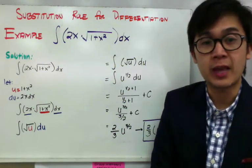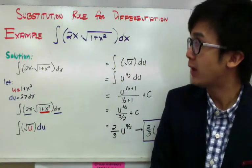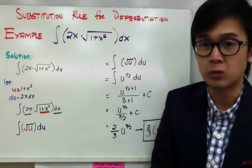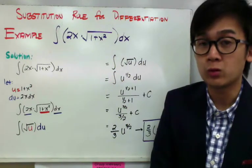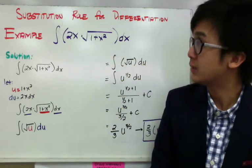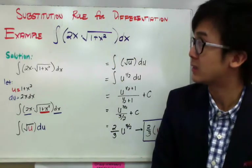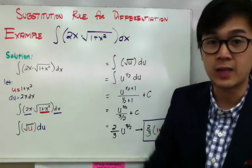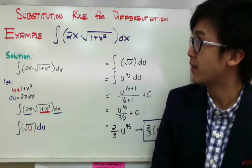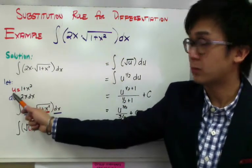For our first example, we have 2x multiplied by the square root of 1 plus x squared dx. To find the integral of this type of function, we could use the chain rule or the product rule, but those apply for differentiation. Since we're doing integration, we use the substitution method. Every time you see two functions, you need to set one of the terms as your new variable. In this case, I'm going to use 1 plus x squared as my new variable u.